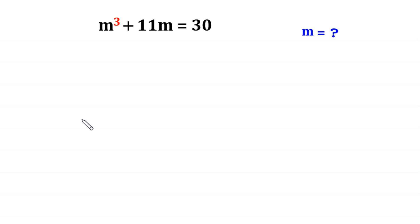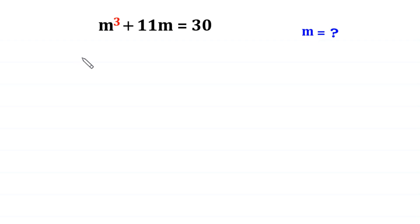Hello, welcome to how to solve this very nice cubic equation: m cubed plus 11 times m is equal to 30. We need to find all possible values of m, so let's start.